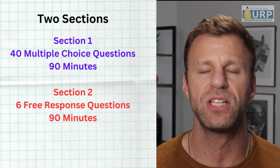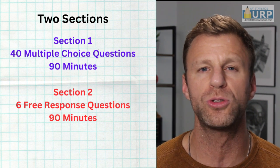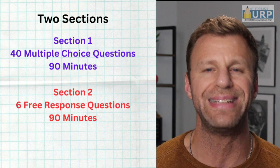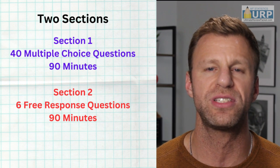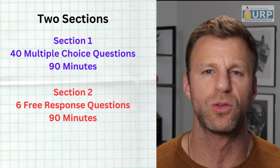So: 90 minutes for 40 multiple choice questions, 90 minutes for six free response questions. Let's talk a little bit more about the multiple choice questions. There are nine units in AP Statistics, and all nine units are covered in some shape or form on the multiple choice questions.